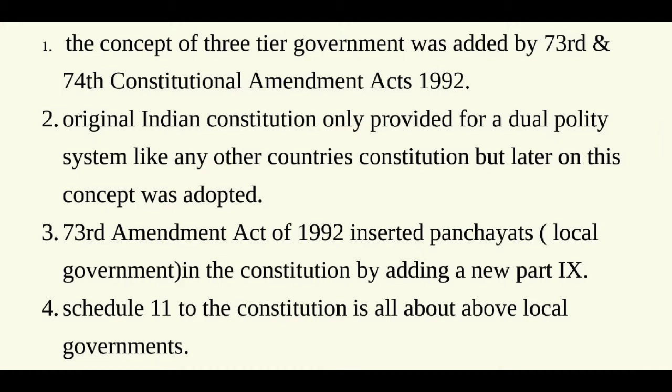Originally, the Indian Constitution only provided for a dual polity system, like many other countries' constitutions. That dual polity system consisted of a central level government and a state level government — a federal type of structure. Later on, when we talk about 1992, it was felt that at the ground level there was a requirement for an authority, meaning a sub-state level.